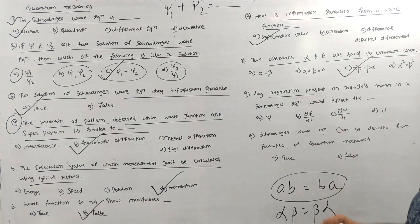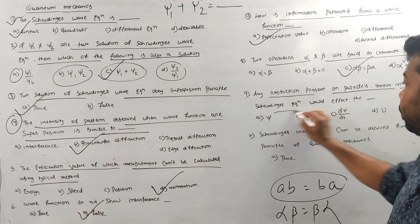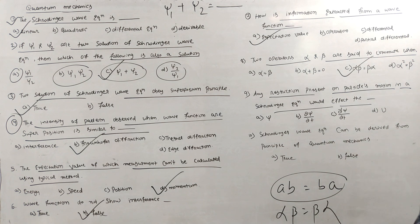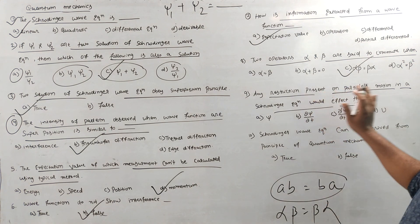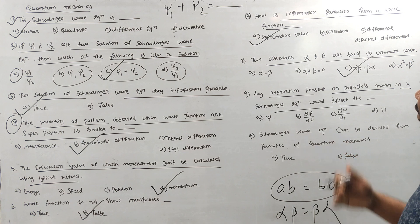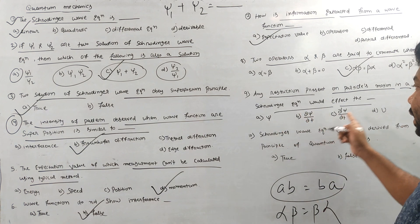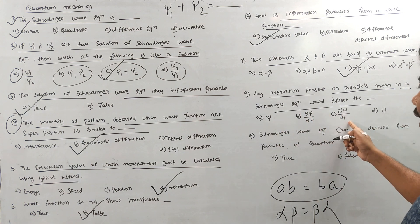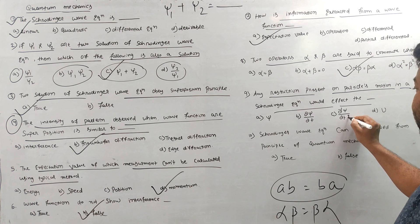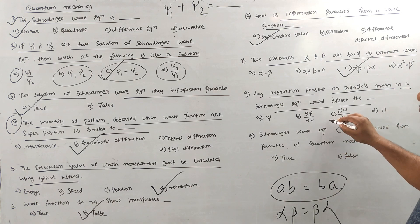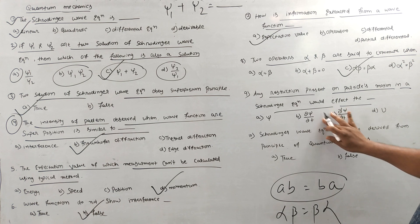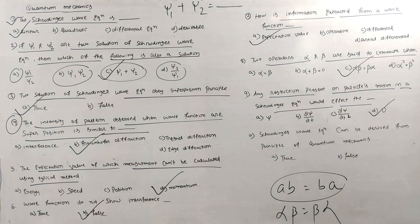Any restriction present on the particle motion in the Schrödinger equation should affect which term? Looking at the Schrödinger wave equation — ψ, del ψ by del t, del squared by del t squared, del t squared, and U — it can change the potential energy U.